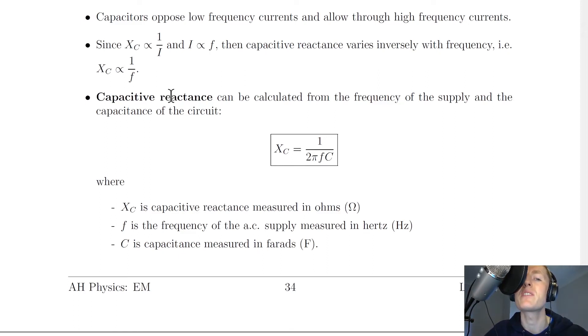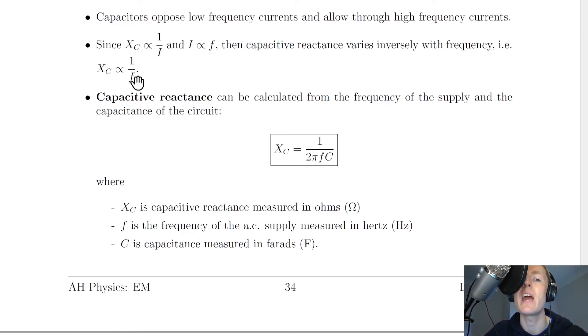There is also a relationship for capacitive reactance in terms of the frequency F. So it says that capacitive reactance can be calculated from the frequency of the supply and the capacitance of the circuit, where we have XC is equal to 1 over 2 pi FC.